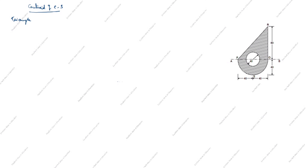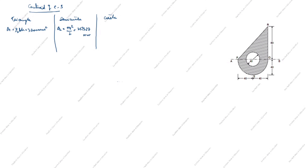Next we find the centroid of the composite shape. The shape is split into triangle, semicircle, and circle. The areas are: A1 (triangle) = 3200 mm², A2 (semicircle) = 2513.27 mm², and A3 (circle) = 1256.63 mm².